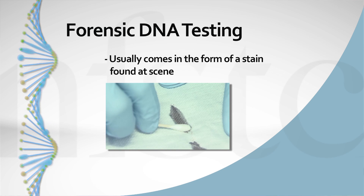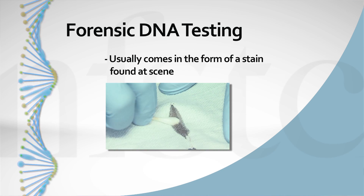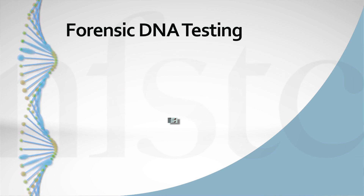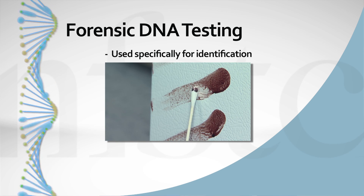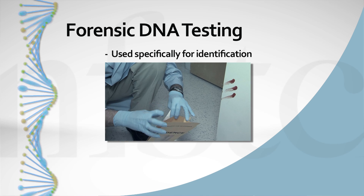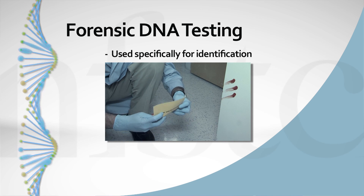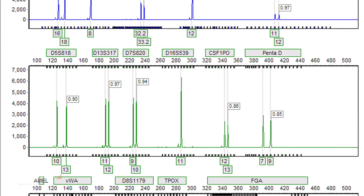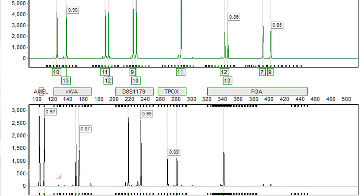The parts of DNA tested for forensic purposes do not code for anything that can be seen physically. Forensic DNA testing usually comes in the form of a stain found at a scene, so we do not know the sex of the person. It is used specifically for identification purposes — not to determine physical characteristics or whether an individual is predisposed to any condition. We determine the number of times certain sequences are repeated, and these sequences are repeated at different amounts in different people, which is used to build the DNA profile of an individual.